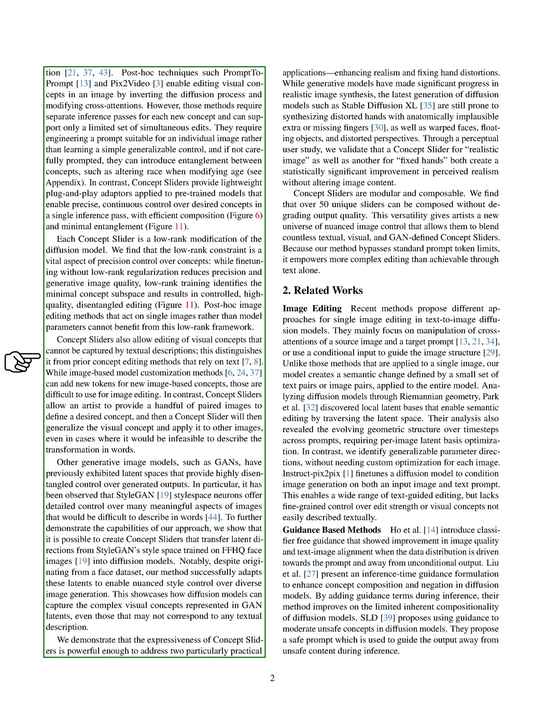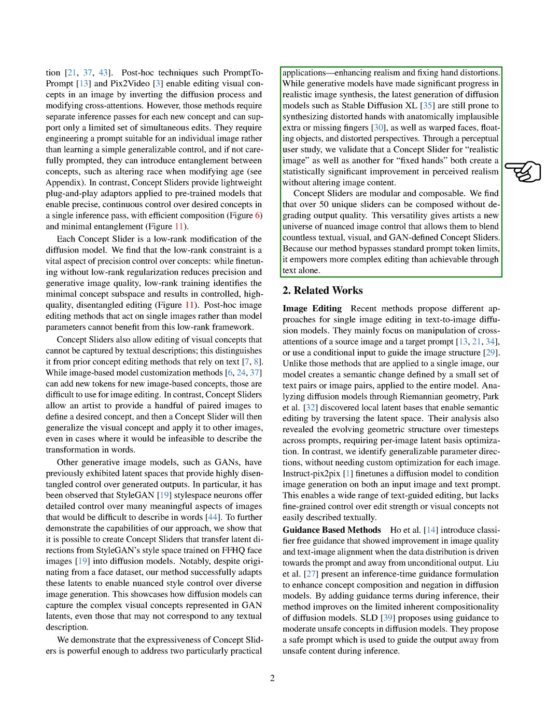We demonstrate that concept sliders are powerful enough to address two particularly practical applications: enhancing realism and fixing hand distortions. While generative models have made significant progress in realistic image synthesis, the latest generation of diffusion models such as Stable Diffusion XL are still prone to synthesizing distorted hands with anatomically implausible extra or missing fingers, as well as warped faces, floating objects, and distorted perspectives. Through a perceptual user study, we validate that a concept slider for realistic images, as well as another for fixed hands, both create a statistically significant improvement in perceived realism without altering image content.